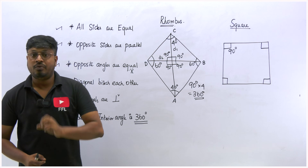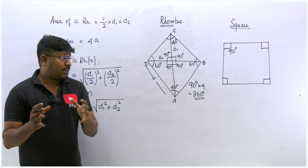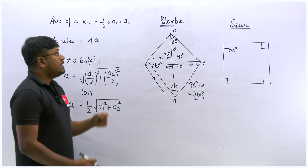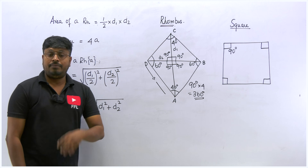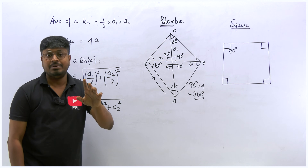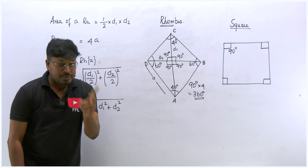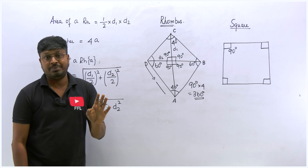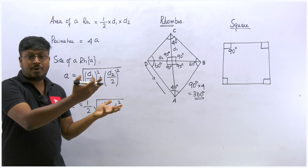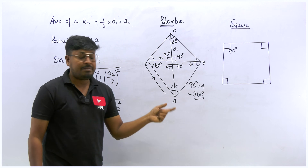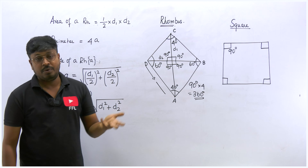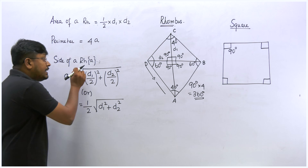Now let me move on to the three important formulas in the topic rhombus. First is the area of a rhombus: you multiply the two diagonal values and divide by two - half of d1 into d2. That means diagonal one multiplied by diagonal two, divided by two, gives the area of the rhombus. Next, perimeter of the rhombus: since all sides are equal, if you take one side as A, then all four sides are A, A, A, A, which we write as 4A. So perimeter of a rhombus is 4A.